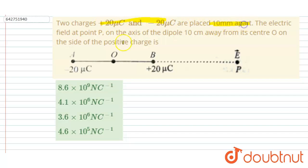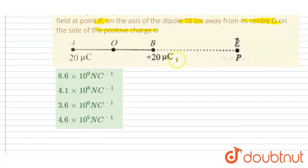10 mm apart. Electric field at a point P on the axis of the dipole 10 centimeter away from its center on the side. You can see positive charges kept here, so it is given here in the question that this distance is 10 centimeter, this distance, right?